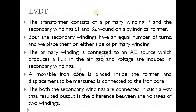The transformer consists of primary windings P and secondary windings S1 and S2, all bounded on a cylindrical former. The primary windings are centered, and the secondary windings S1 and S2 are placed on either side of the primary windings. Both secondary windings have an equal number of turns.